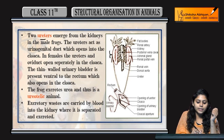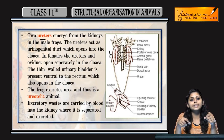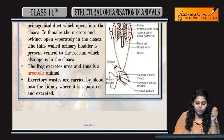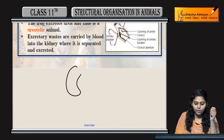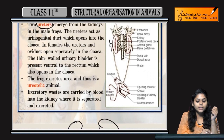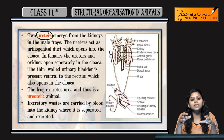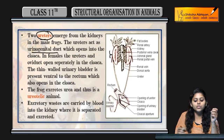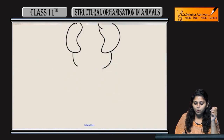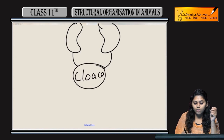Jho ureters hai, there are two ureters that emerge from the kidney. Ureter act kerti hai as urinogenital duct, jo further open hoota hai into cloaca.